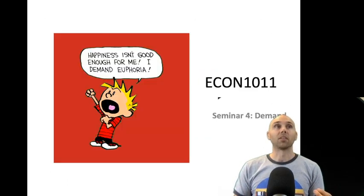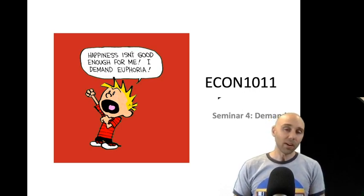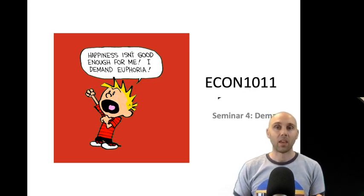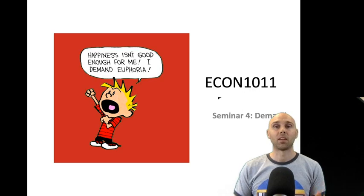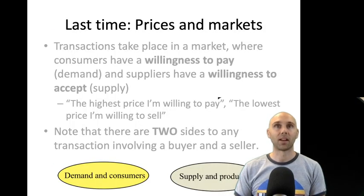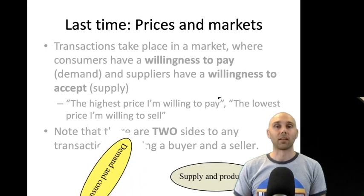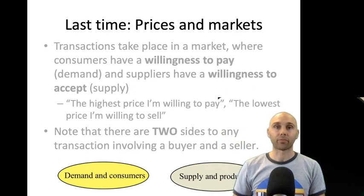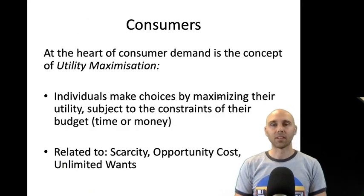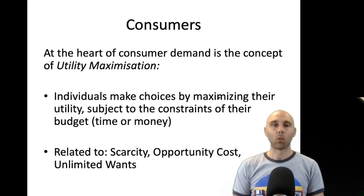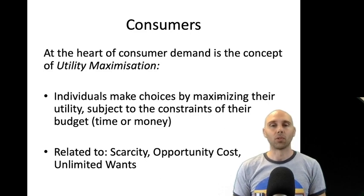Today we're going to look at the demand side, where things are a little bit less straightforward, for the simple reason that producers like money and make their choices on the basis of money. Consumers want to be happy. And happiness is a tough concept to get down mathematically. So we've seen the supplier side with producers; now we're going to look at the demand side with consumers. You'd think we'd be bringing psychologists or sociologists in, but what economists have done is come up with a concept called utility.